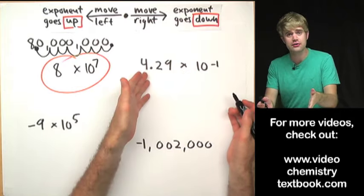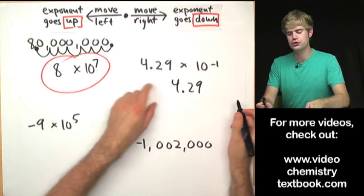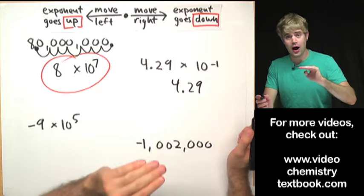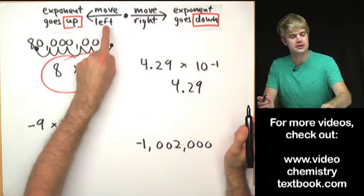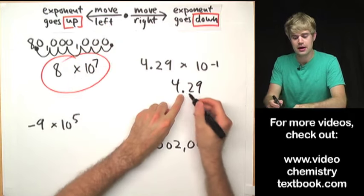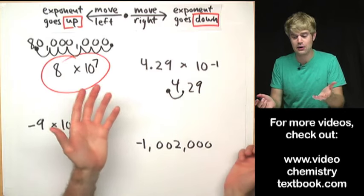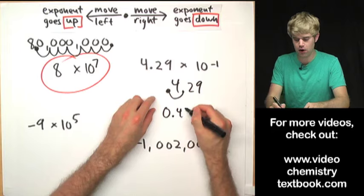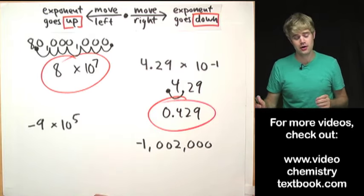Taking 4.29 times 10 to the negative first out of scientific notation: I want to go up to 10 to the zero, so I move the decimal place to the left one spot. The result is 0.429. Sometimes you don't have to move the decimal place very far.